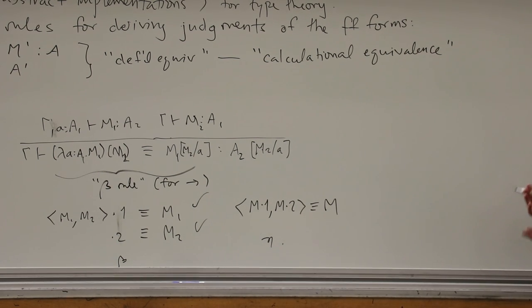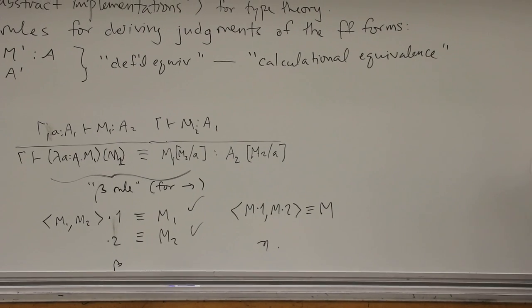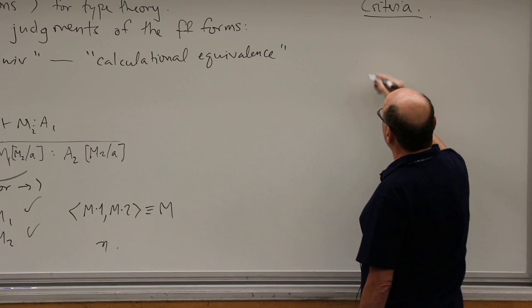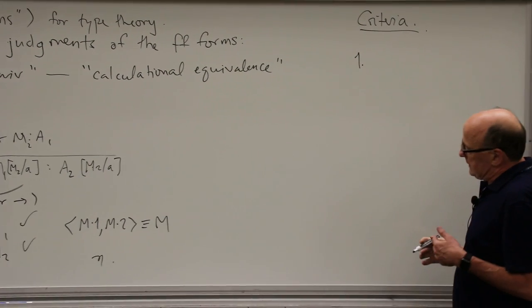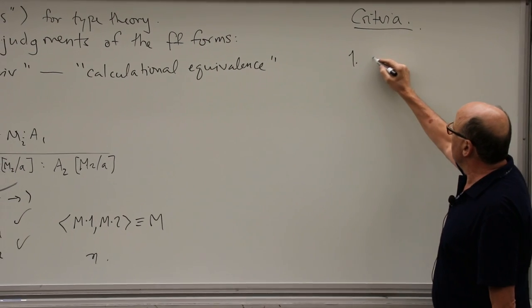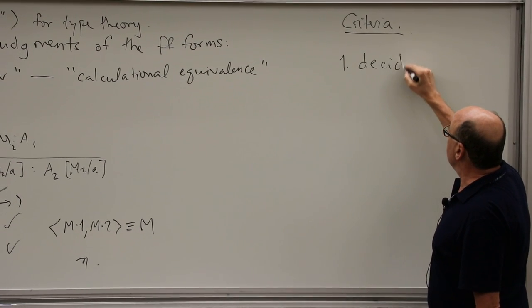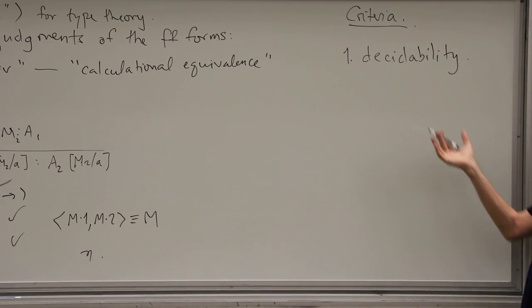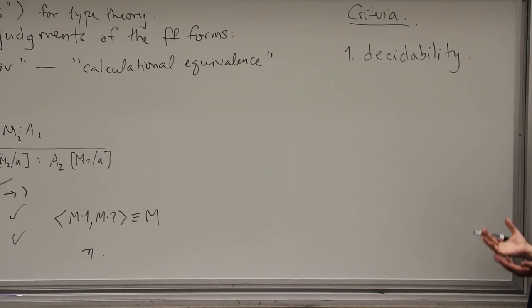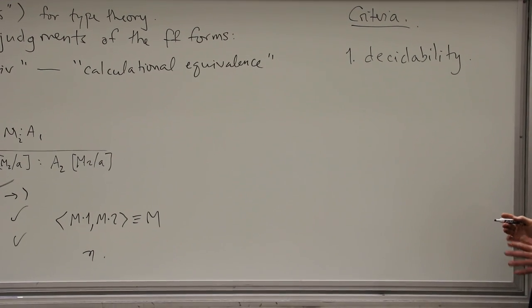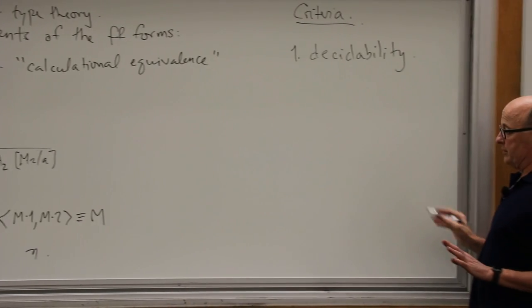The reason for the 'maybe' on eta rules has to do with various criteria. One thing you can do is have decidability — meaning type checking is decidable. It's a very desirable thing, though as I'll come back to, it's not always the case. If we want decidability, we have to be able to decide definitional equivalence.